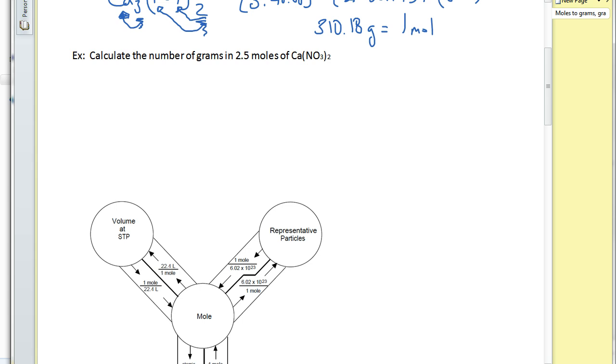So here's what we're going to do. We're going to treat this problem just like we always treat a problem. The problem says calculate the number of grams of 2.5 moles of calcium nitrate. So first I want to do is I want to identify my known quantity, my known. And my known is always the value that they gave me. So it's 2.5 moles.